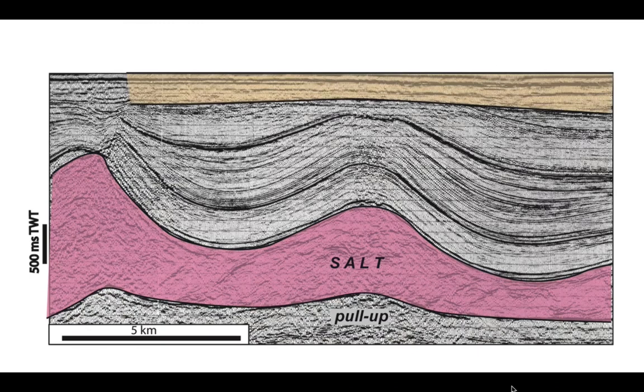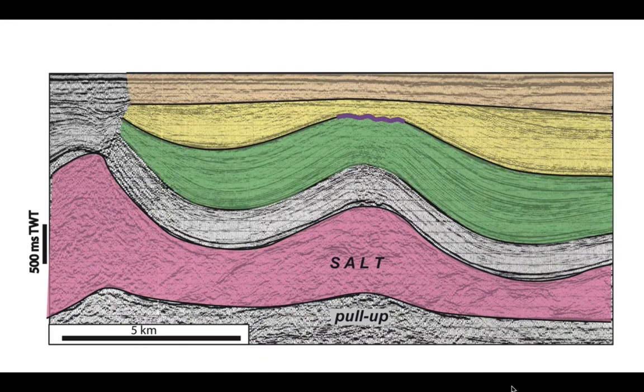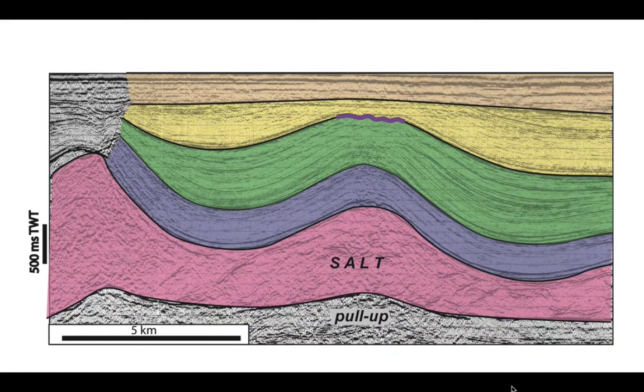So here are the younger strata in here, and I'll pick another horizon there. I've noticed that there's an unconformity which I picked in purple because the strata below seem to be truncated. There are those lower strata which I picked out in green, and finally another package there in that sort of mauve color.